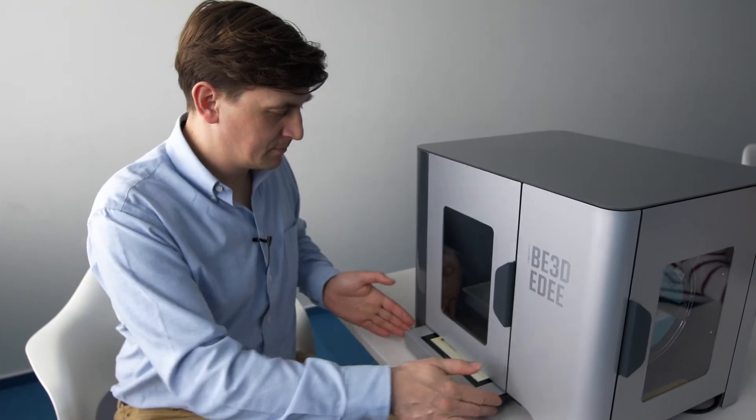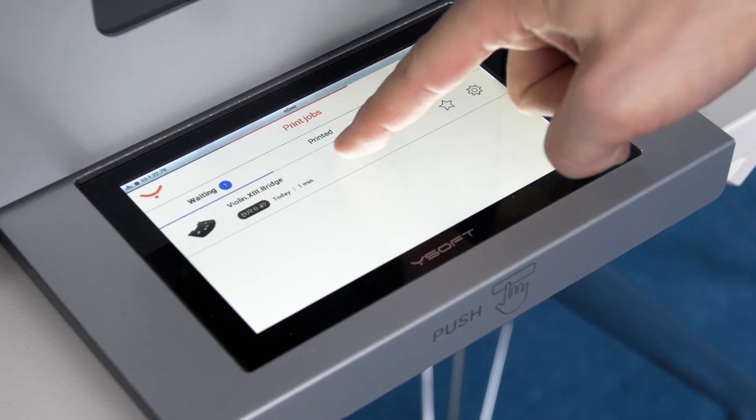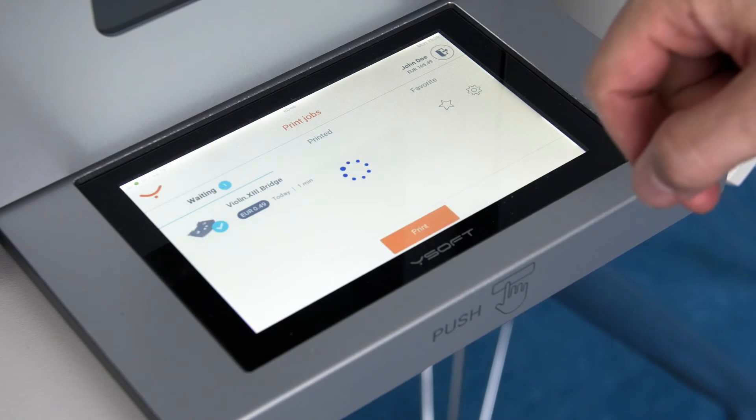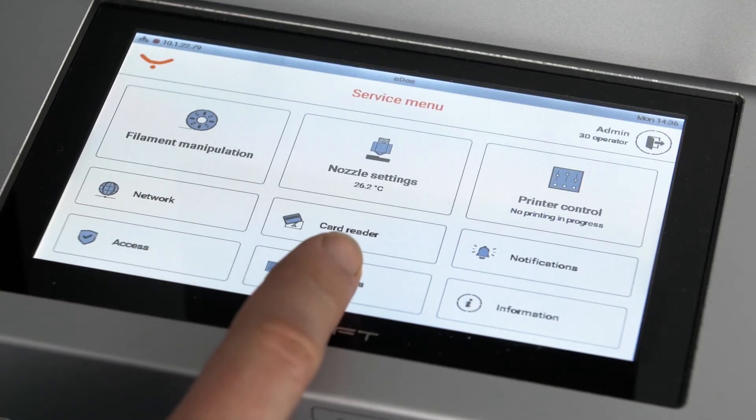Operating the printer is done through a pullout touchscreen. Students will use the screen to start and finish their 3D printing, and you will use it to change printer settings.